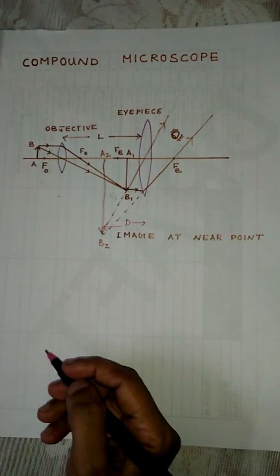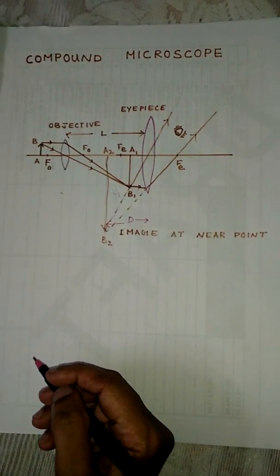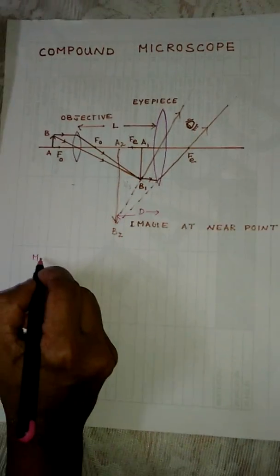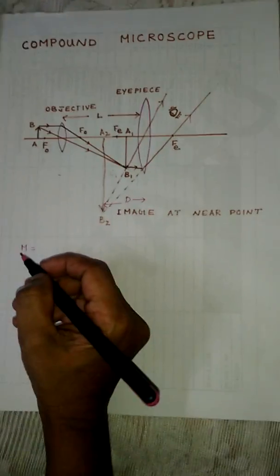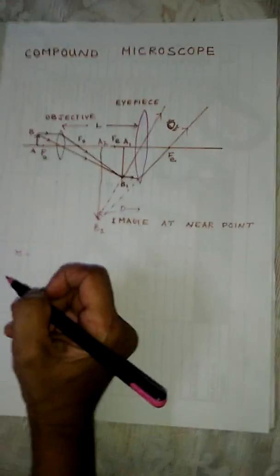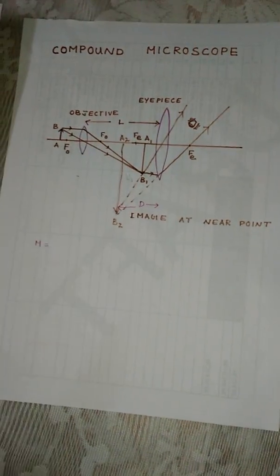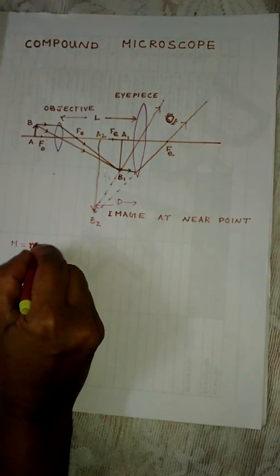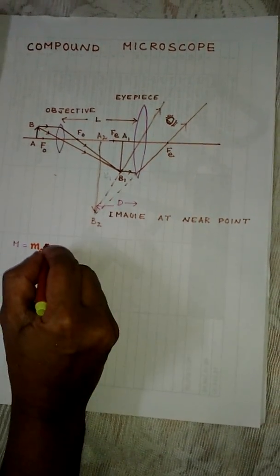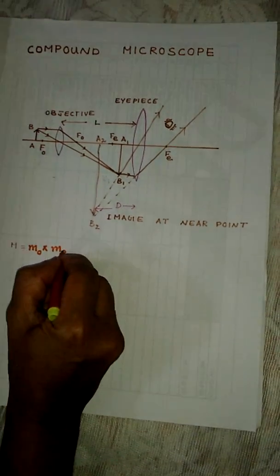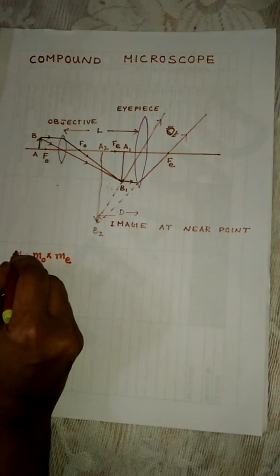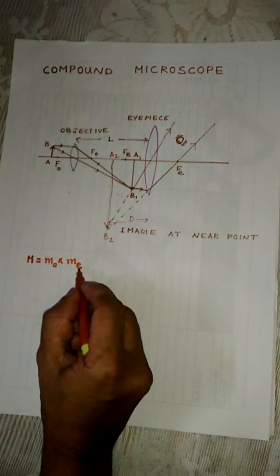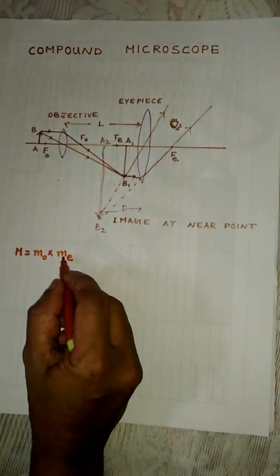Now let us find the magnifying power. The magnifying power is the total linear magnification. For two lenses, the total magnification is the product of the linear magnifications. MO is the magnification of the objective and ME is the magnification of the eyepiece.